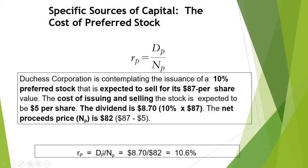Now let's calculate the cost of this preferred stock. We know that cost of preferred stock Rp is equal to Dp divided by NP, where Dp indicates dividend payment and NP indicates net proceeds. The dividend payment of this preferred stock is $8.70, which is 10% of the selling price of $87. So $8.70 divided by net proceeds of $82 equals approximately 10.6%. The cost of preferred stock of Dutchess Corporation is 10.6%.